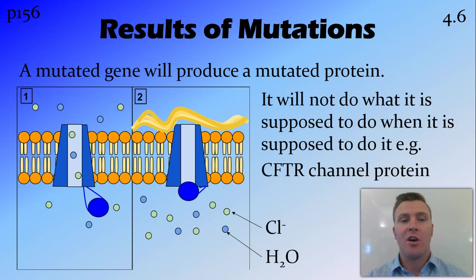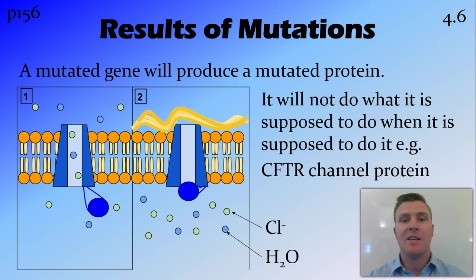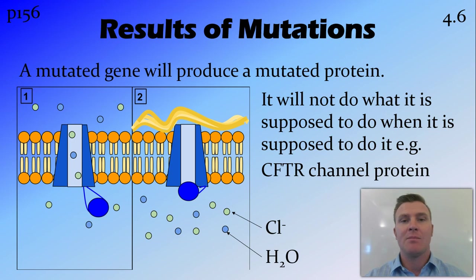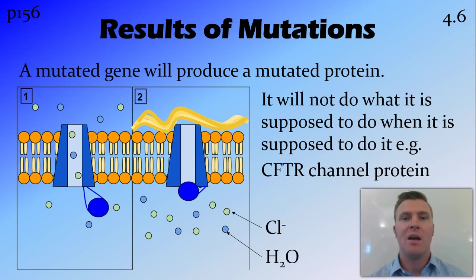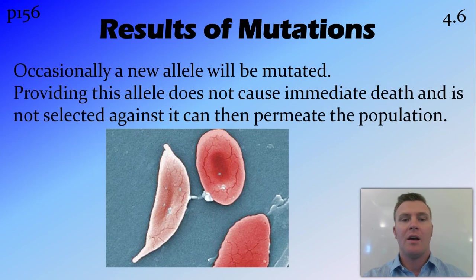In all these cases, the point is that a mutated gene is going to produce a mutated protein that won't do what it's supposed to do and won't be produced when it's supposed to be. An example is the CFTR channel protein — a channel protein in soft tissue that allows water and chloride ions to move through it. If mutated, as in cystic fibrosis, this protein doesn't work correctly, causing thick mucus to build up in the lungs and soft tissue.